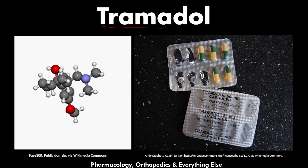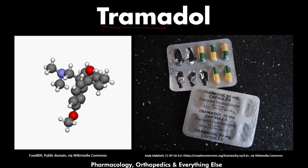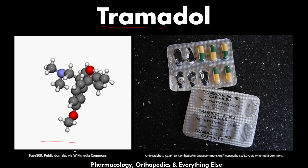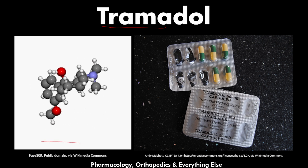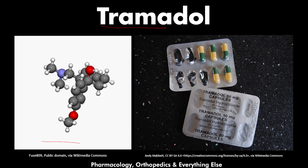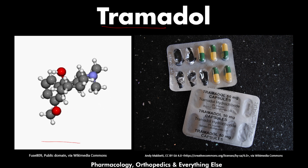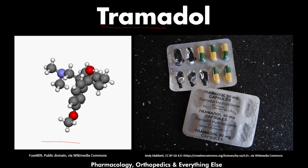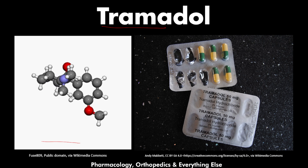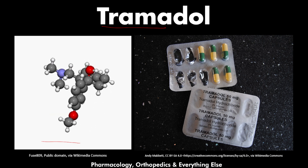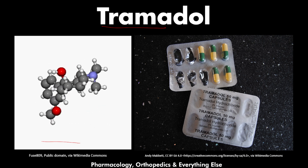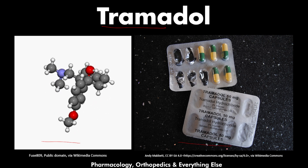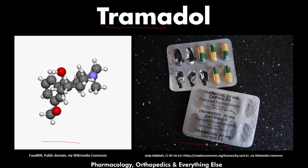Regarding the pictures: the picture on the left is the tramadol chemical structure. The black spheres are carbon atoms, the white spheres are hydrogen atoms, the blue sphere is the nitrogen atom, and the red spheres are the oxygen atoms. The right picture shows the oral formula of tramadol.